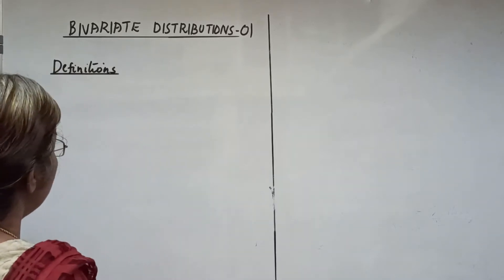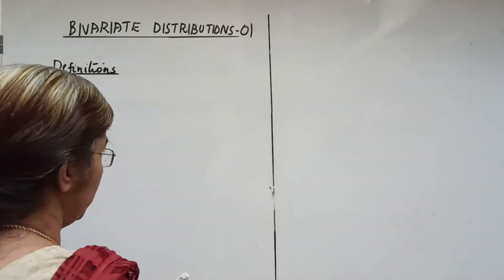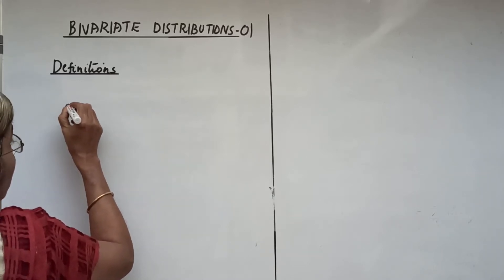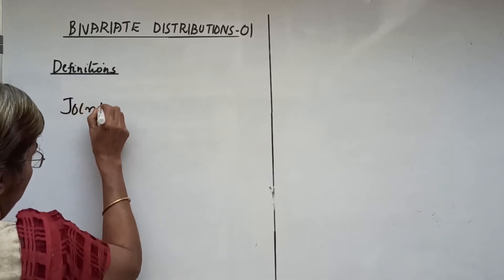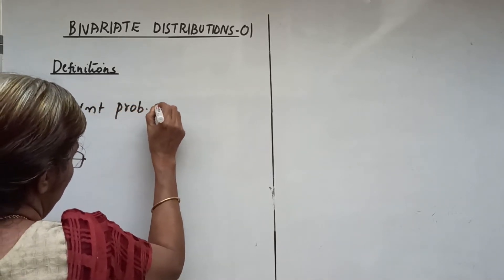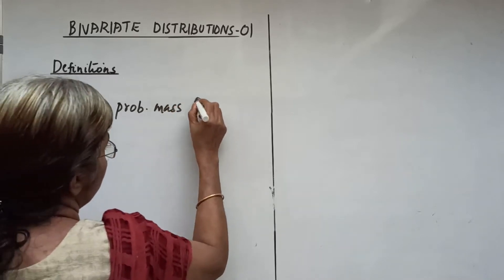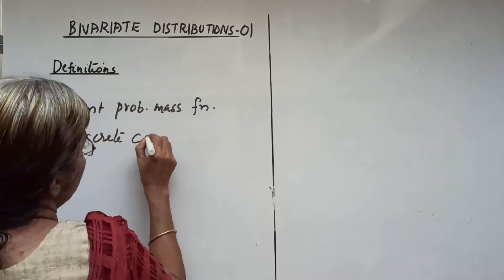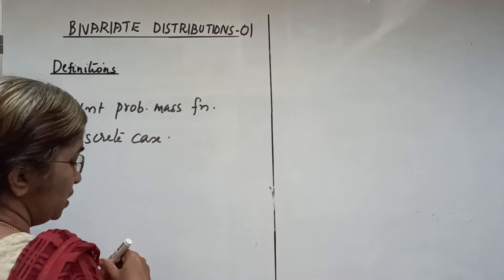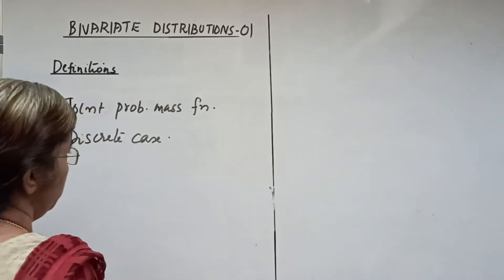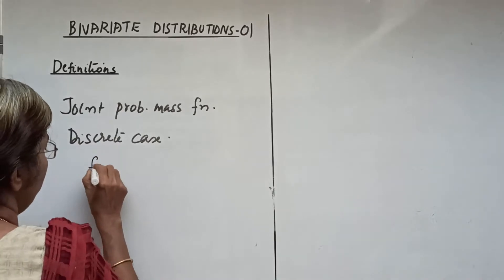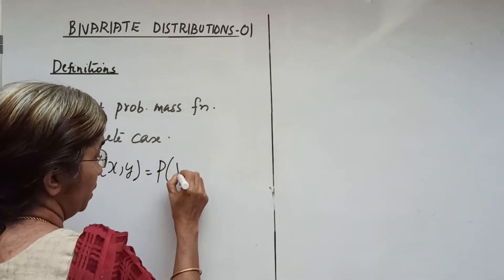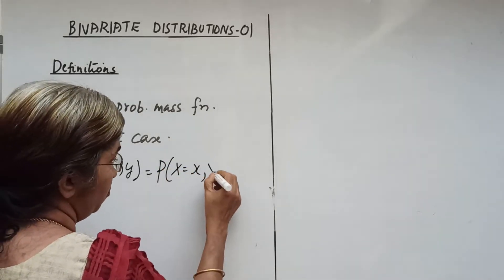We consider firstly the definitions in the discrete case, that is, x and y have a joint probability mass function. In the discrete case, the probability that x equals x and y equals y simultaneously gives f of x y. That is, f of x y is called the probability mass function of x and y simultaneously.